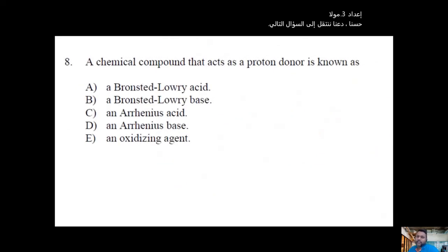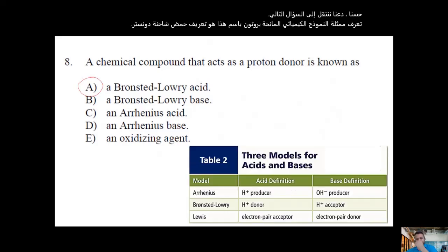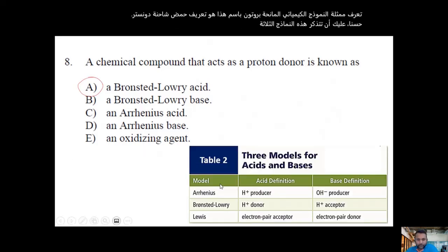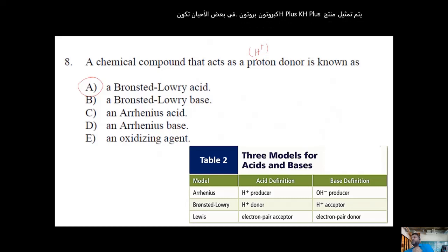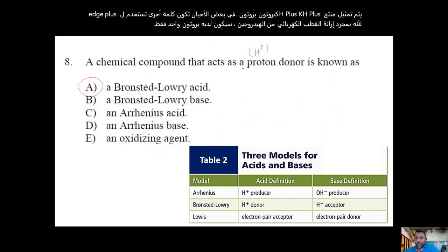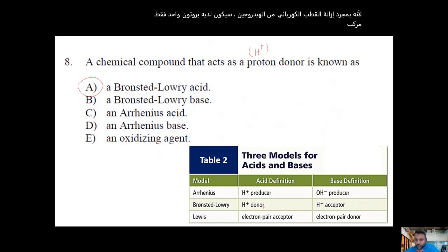A chemical compound that acts as a proton donor is known as a Brønsted-Lowry acid. Remember the three models of acids: Arrhenius acid is an H⁺ producer. Since hydrogen without its electron has only one proton, a proton donor is the Brønsted-Lowry definition of an acid.